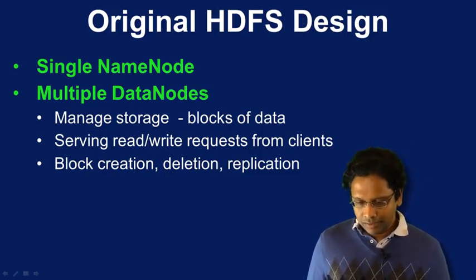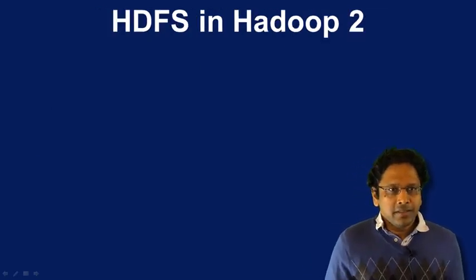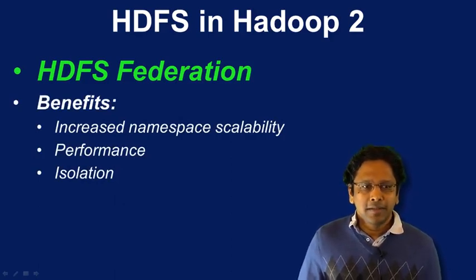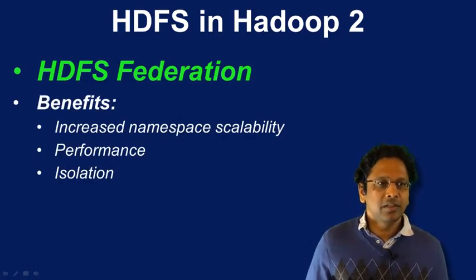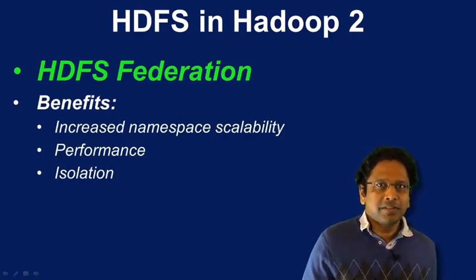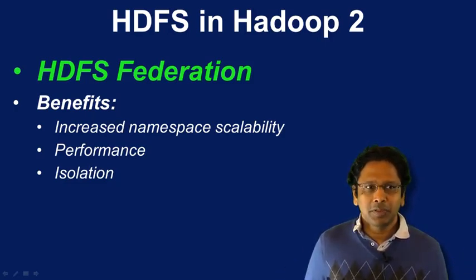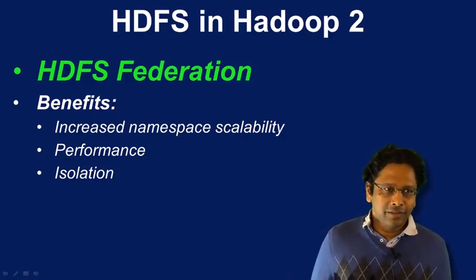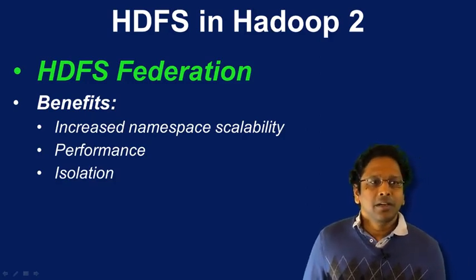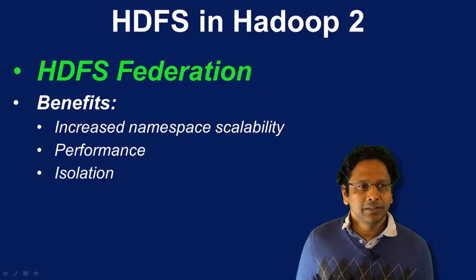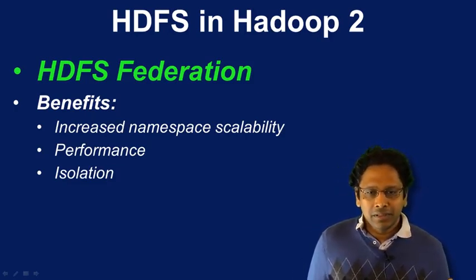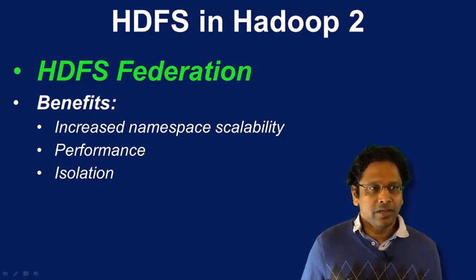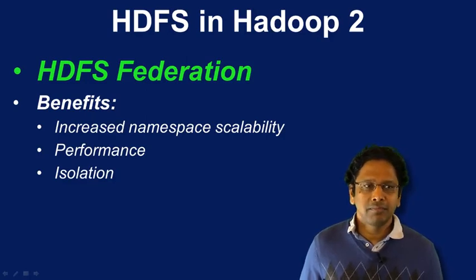In the original design there was a standby name node option and failover could be handled manually, and that's preserved in the current design too. What changed in Hadoop 2 is HDFS federation. Federation means having multiple name nodes to increase namespace scalability. In the original design a single name node handled all namespace responsibilities, which doesn't scale to thousands of nodes or billions of files. Federation addresses this and also brings performance improvements. Multiple namespaces and name nodes also allow isolation of applications — intensive metadata operations won't impact everything else.